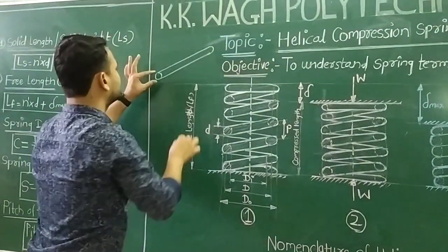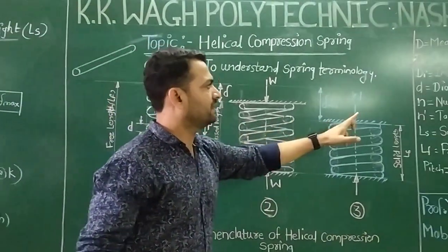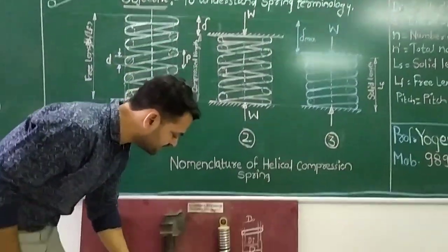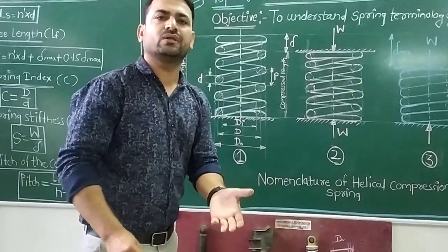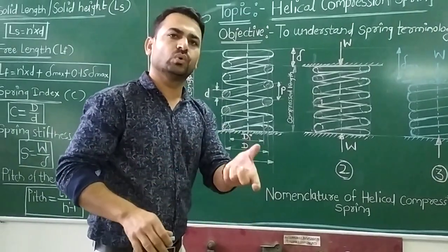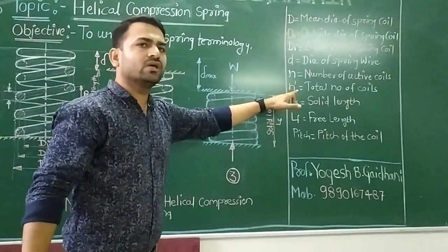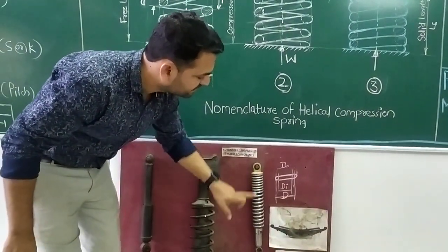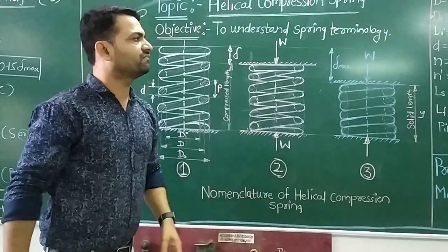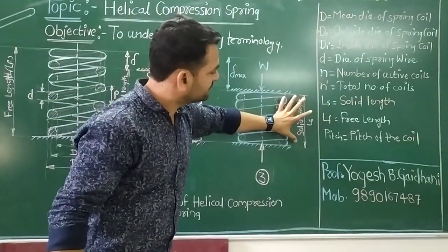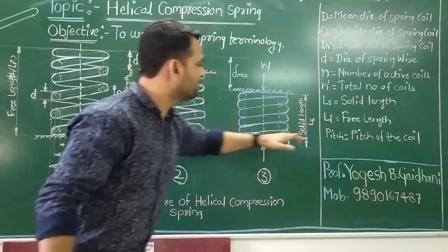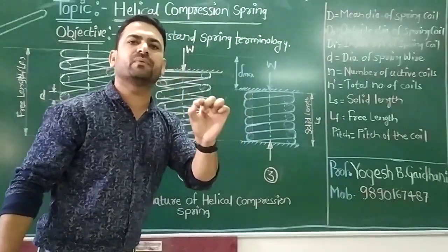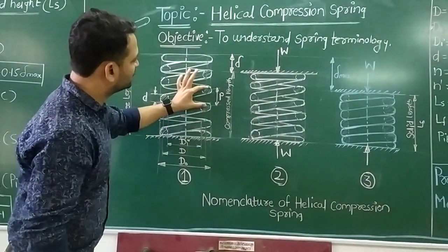N is the number of active turns — the turns that actually participate in compression. N' (N dash) is the total number of turns, including the top and bottom inactive turns. LS is the solid length. LF is the free length when the spring is in the unloaded condition. Pitch is the distance between two successive turns.